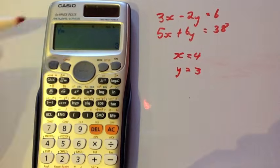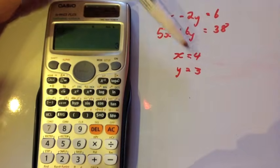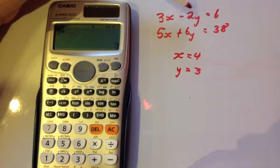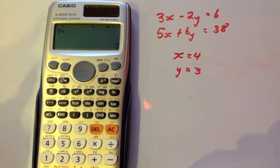Let's just check them. Let's put the 4 in here and the 3 in here. 3 times 4 is 12, take away 2 times 3 is 6, 12 take away 6 is 6, so it's correct. That's just a quick way you can use the Casio FX991 ES model to solve simultaneous equations.